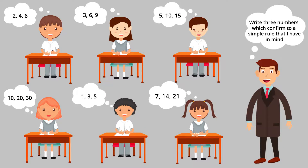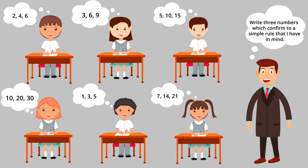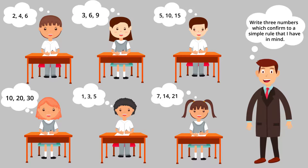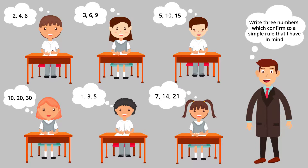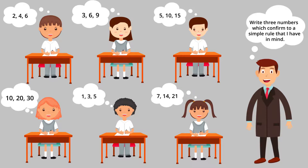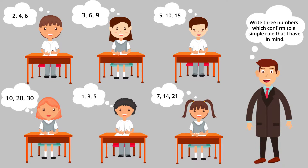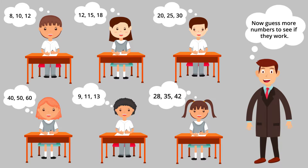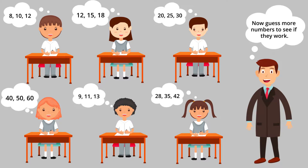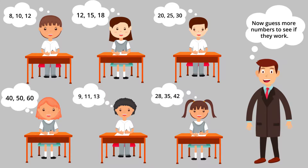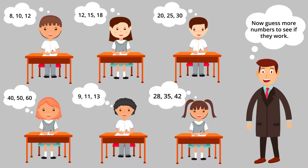Then the participants were asked to write down sets of numbers they believed conformed to this rule, while receiving feedback from the experimenter on whether the numbers conformed or not. The participants were allowed to repeat this procedure until they came up with a hypothesis of what they believed the rule to be.